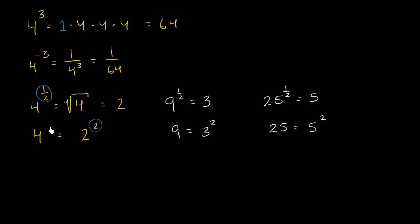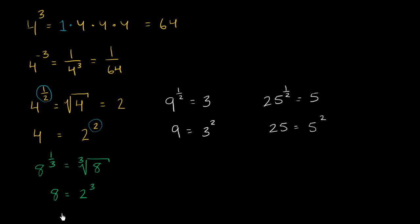Now let's think about what happens when we take something to the 1/3 power. Let's imagine taking 8 to the 1/3 power. The definition here is that taking something to the 1/3 power is the same thing as taking the cube root of that number. The cube root is asking: what number, if I had three of it and multiplied them, would give me 8? We already know that 8 is equal to 2 to the third power, so the cube root of 8, or 8 to the 1/3, is just going to be equal to 2.